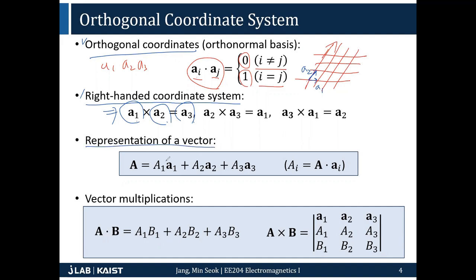The representation of vector is the same as what we learned. We have A1a1, A2a2, A3a3. Capital A1, A2, A3 are just coefficients, and small a1, a2, a3 are the bases. Vector multiplications are defined just the same as Cartesian, assuming that vectors A and B are defined at the same point.